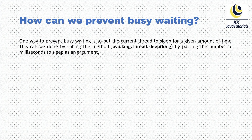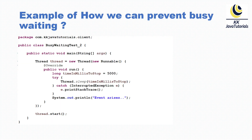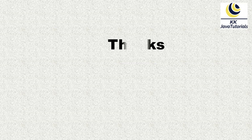Now, how can we prevent busy waiting? One way to prevent busy waiting is to put the current thread to sleep for a given amount of time. This can be done by calling the sleep method and passing the number of milliseconds to sleep as an argument. That is the perfect replacement for what we just saw.